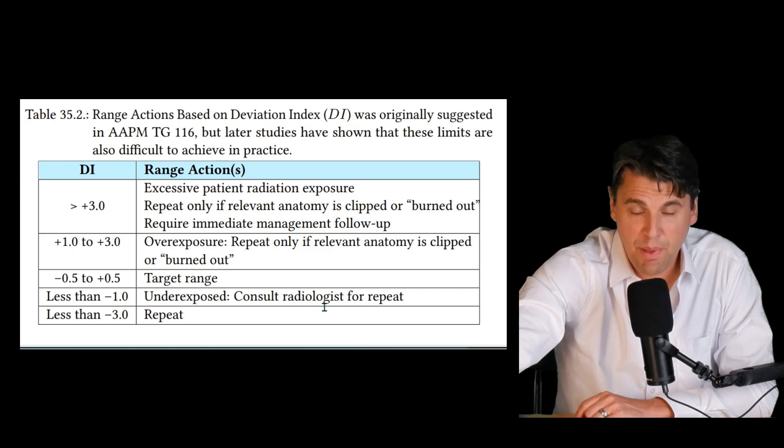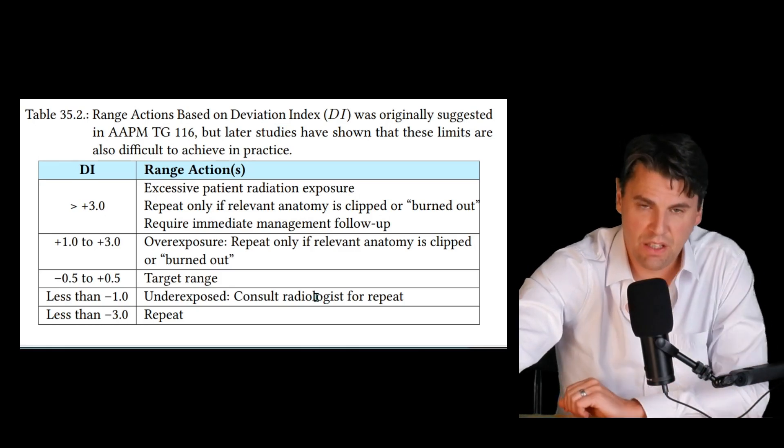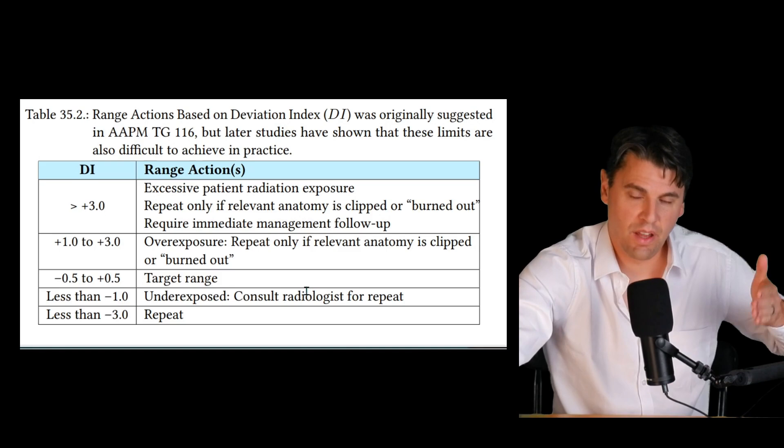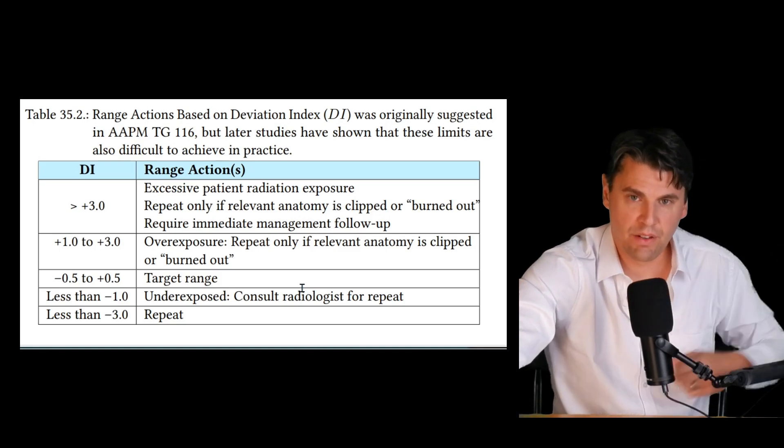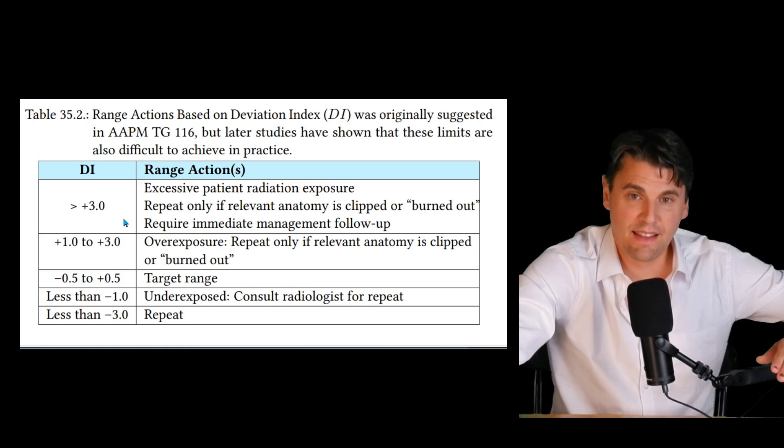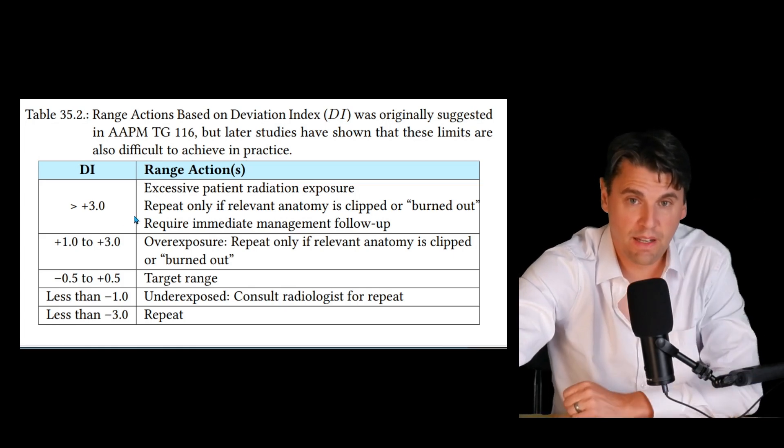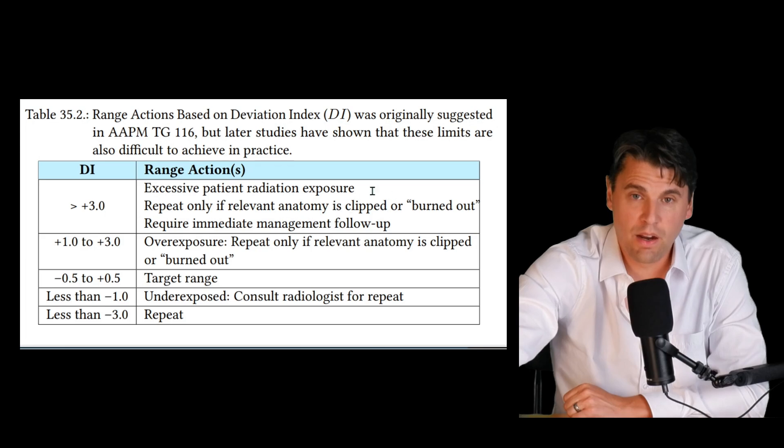Then from the AAPM Task Group 116, what were the recommendations for the actions that you should take depending on what your DI is. If you're more than that three off, if you're less than half as much of the radiation or more than twice as much of the radiation, that's where you're going to actually want to take action, actually look at the images, see if you need to reacquire.